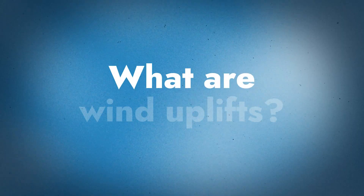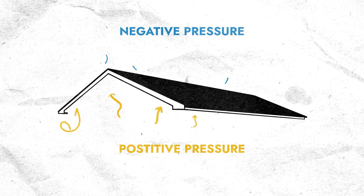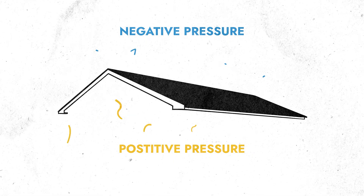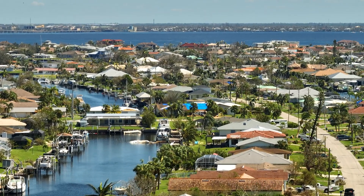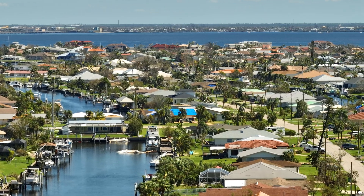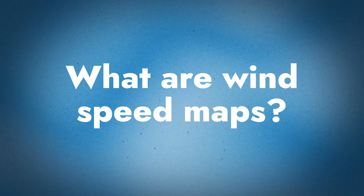Wind uplifts are the positive and negative pressures your roof system is going to experience based on the geographic area it's located in. Some areas are going to have higher requirements than others. If you look at Florida or Texas, those areas are obviously going to see more wind than Minnesota. Different geographic locations are going to have different requirements based on the wind speeds seen in those areas. There's a tool called wind speed maps — what are those and why do they matter to roofing contractors and building owners?